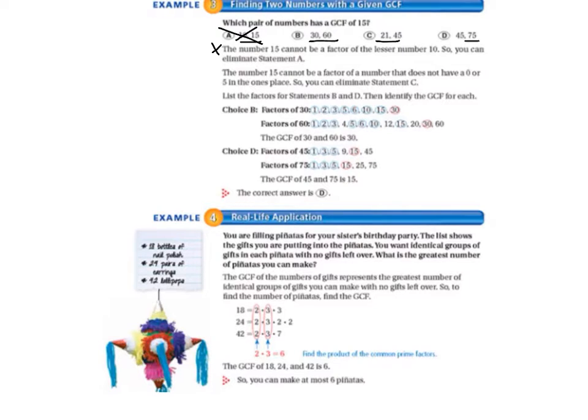So letter A doesn't work. We can cross that out. Now, the number 15 cannot be a factor of a number that does not have a 0 or 5 in the 1's place. So if you think about the multiples of 15, 15 times 1 is 15, 15 times 2 is 30, 15 times 3 is 45, and so on. So everything ends in a 5 or a 0. So you can eliminate statement C because 21 doesn't work.